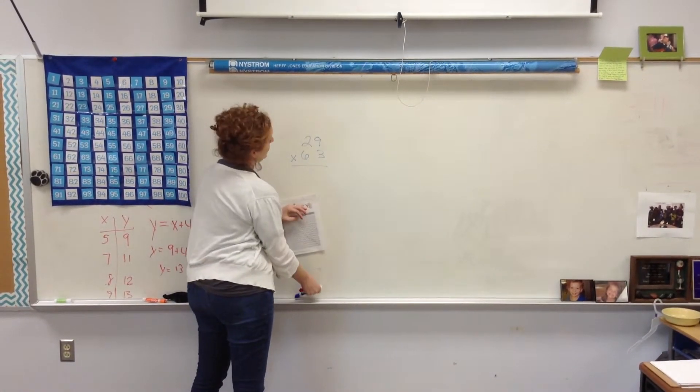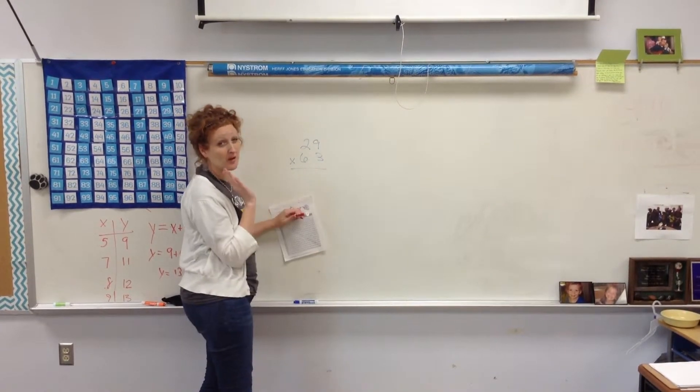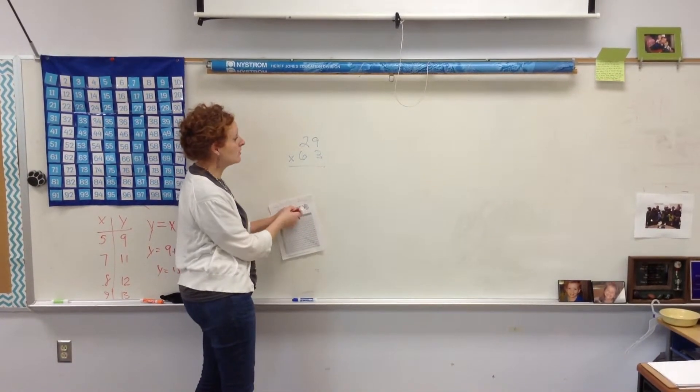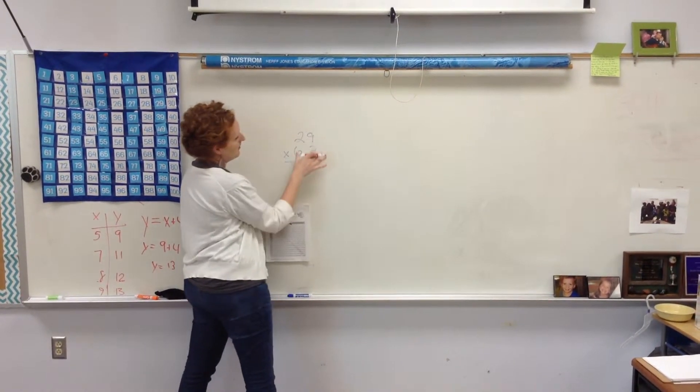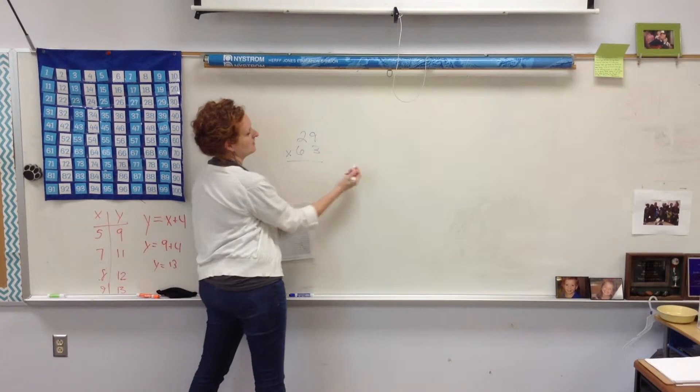Now, they've learned two different ways to do this in their classroom. I'm going to start with a way that may be newer to some of you, called partial product or window pane. It's the same thing. So, when I have a problem like this, it's a two digit times two digits.